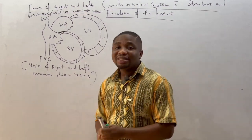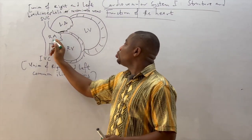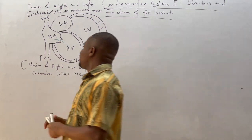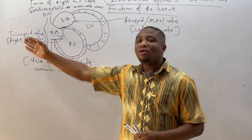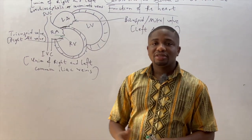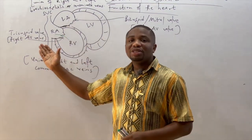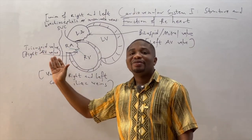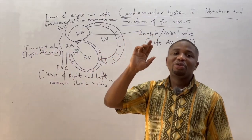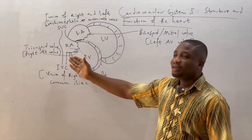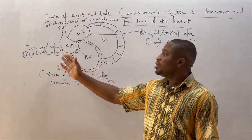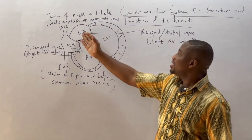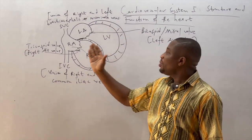Once the blood is drained into the right atrium, it flows through a valve known as the tricuspid valve. Based on its location, it is situated between the right atrium and the right ventricle. It is called the tricuspid valve because it has three cusps or three leaflets. Blood flows from the right atrium through the tricuspid valve into the right ventricle.